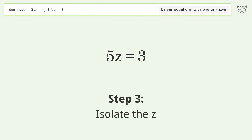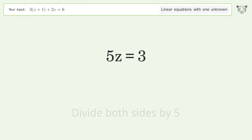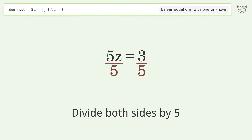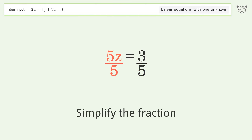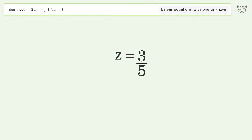Isolate the z — divide both sides by 5. Simplify the fraction. And so the final result is z equals 3 over 5.